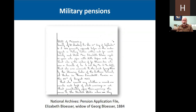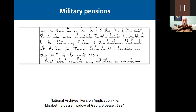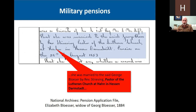Military pensions are another source. Many German immigrants served in the Civil War — in fact, it was the German immigrants who kept Missouri in the Union. The Germans, by and large, were anti-slavery and were really for the Union cause. This is a pension application file filed by Elizabeth Blusser, the widow of Georg Blusser, from 1884. We're going to look at this section, which states that she was married to Georg Blusser by the Reverend Streving, pastor of the Lutheran Church at Hahn in Hessen-Darmstadt. So there — if that's not the exact village of birth, it's where the parish records will be, and that's where you want to go.